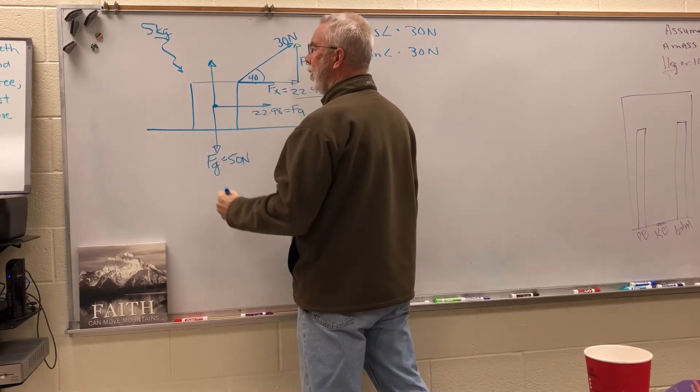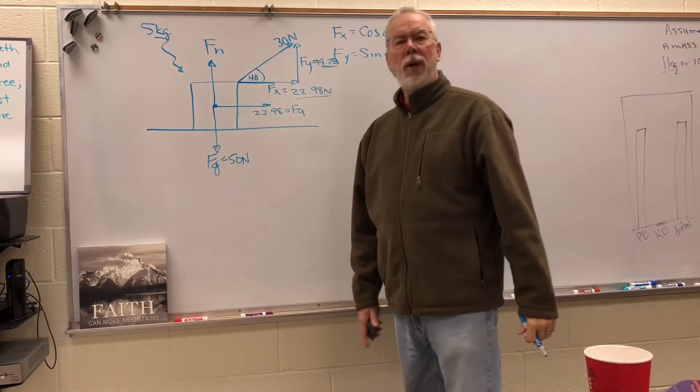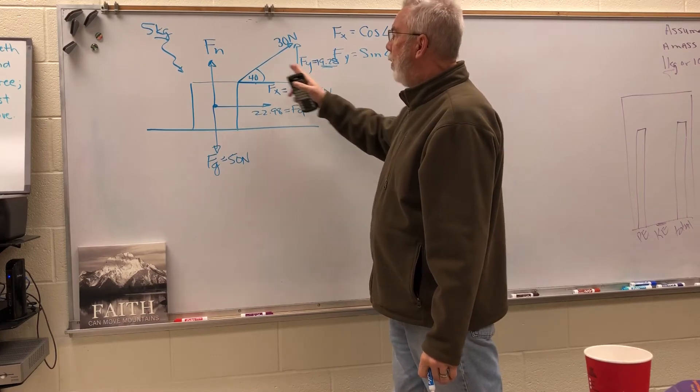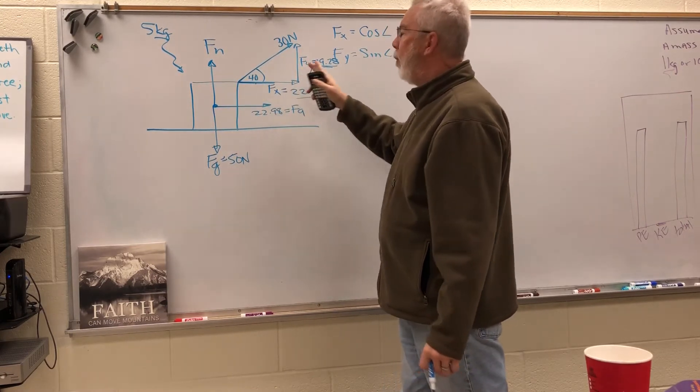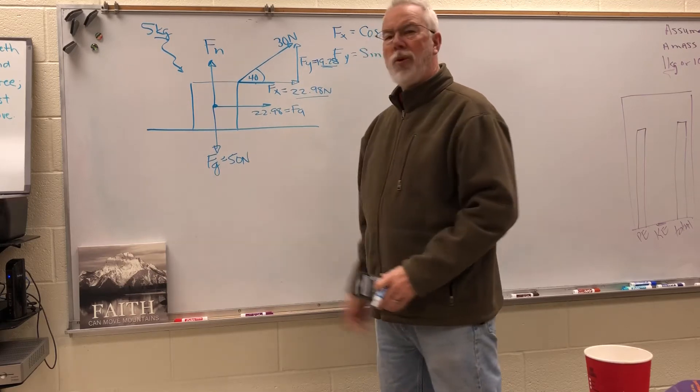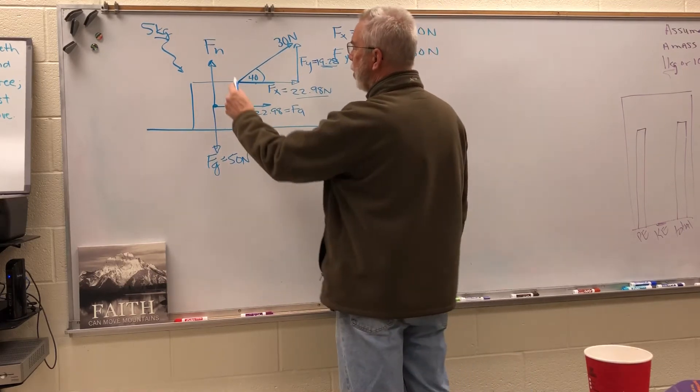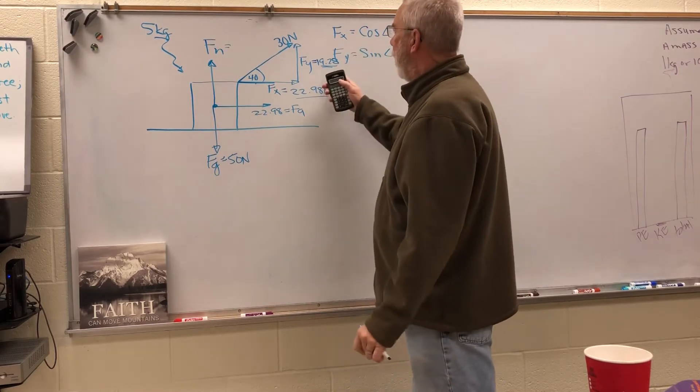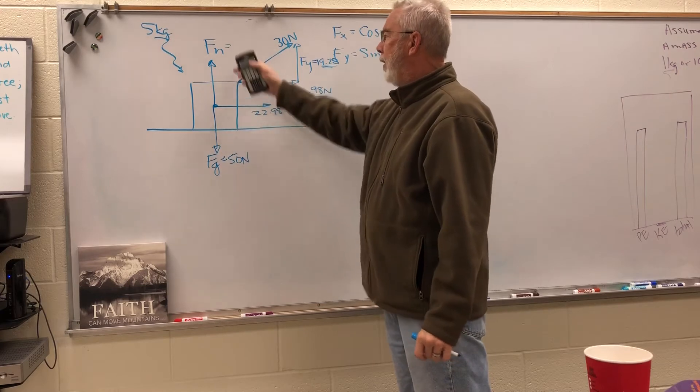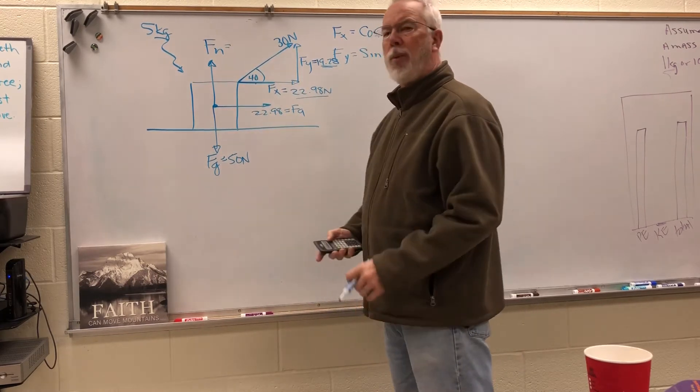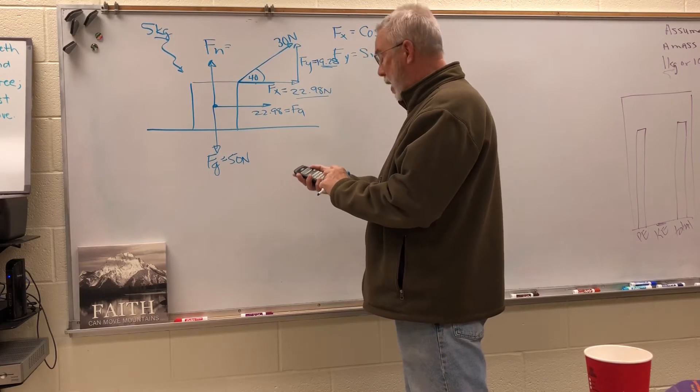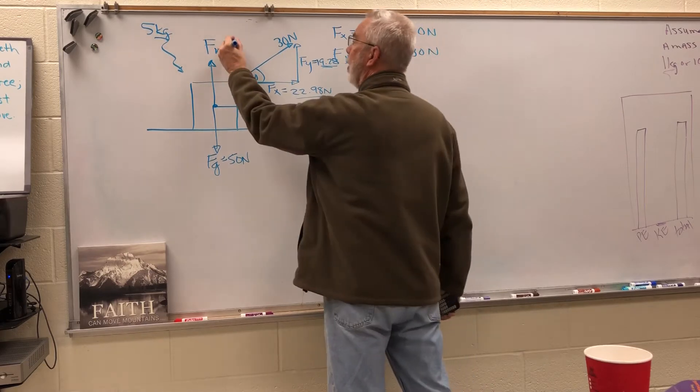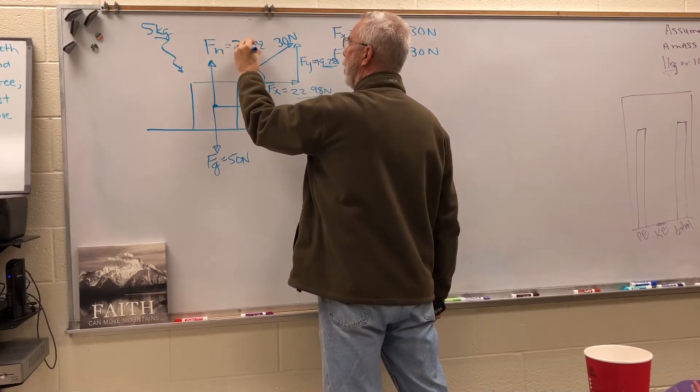So normally, no pun intended, the normal force does all the supporting of the weight of the box. But because we're pulling up on it, the normal force and the F of y are working together to support the weight of the box. So in order to solve for the normal force, we need to subtract the F of y from 50 to get the leftover force that's necessary to support the box.